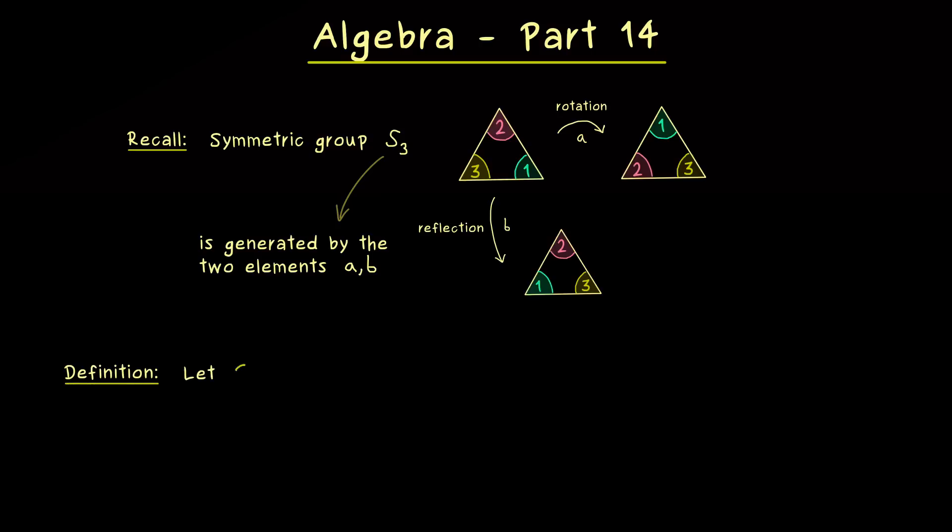And the best definition for that is to consider all possible subgroups that contain these elements. So let's take a general group G and also a subset of elements. And maybe a good name for this subset is a capital S. So it can be just any subset, we don't need an additional structure, just a collection of elements.